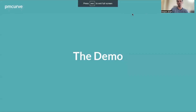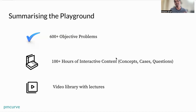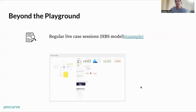So just to summarize the demo of the playground: there are 600 objective problems and 100-plus hours of interactive content. There's also a video library with lectures — after every module there's a two to two-and-a-half hour video lecture from previous cohorts, with the Q&A removed for privacy, but the full content is there. So if you want to skip deep theory or want an easier path through, you can rely on those video lectures. There's also a database, research summaries, and a Slack community you can join via the icon in the top right — with an SLA of around 24 hours for doubt resolution.